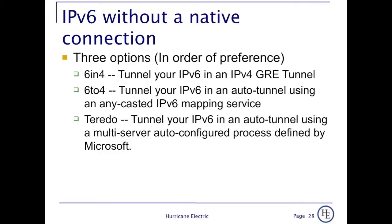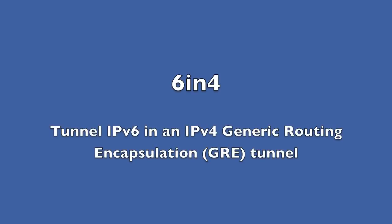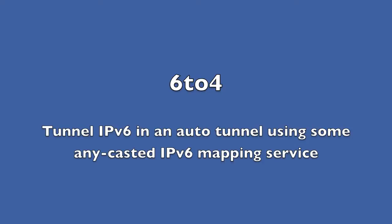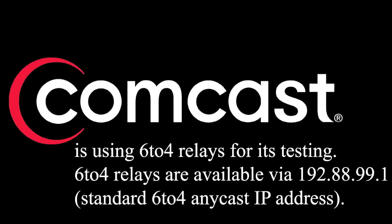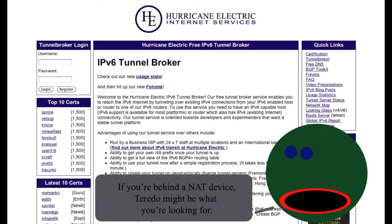A portion of Owen's talk was dedicated to the options you have if you're connecting to IPv6 without a native connection. These three options are as follows: 6in4, which is when you tunnel your IPv6 in a IPv4 GRE tunnel; 6to4, where you tunnel your IPv6 in an auto tunnel using an anycasted IPv6 mapping service; and Teredo, which is when you tunnel IPv6 in an auto tunnel using a multi-server auto-configured process defined by Microsoft.